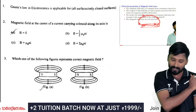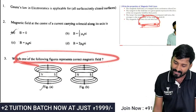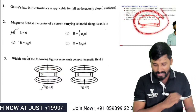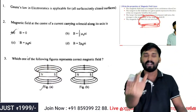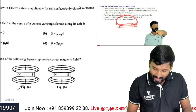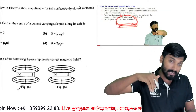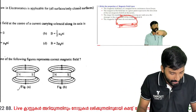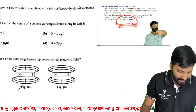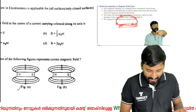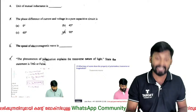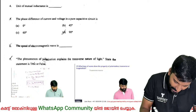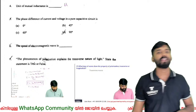Which one of the following figures represents the magnetic field between north and south poles placed together? The magnetic field goes from south to north inside a magnet. The unit of mutual inductance and self-inductance is the Henry — that is important.